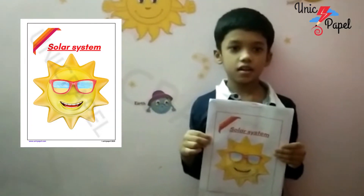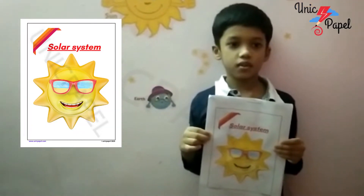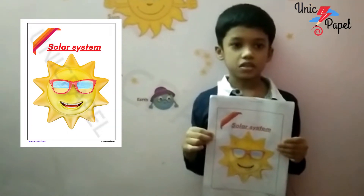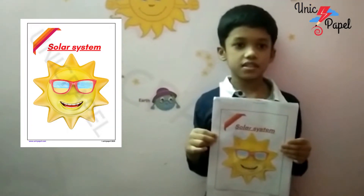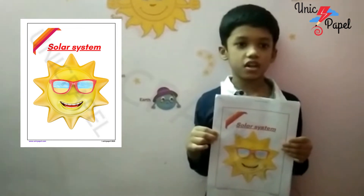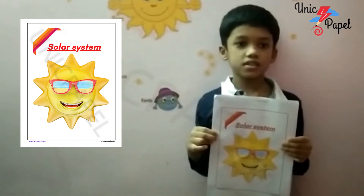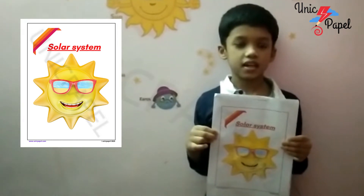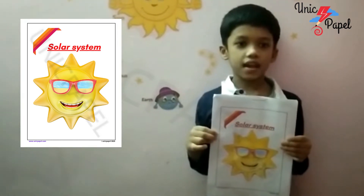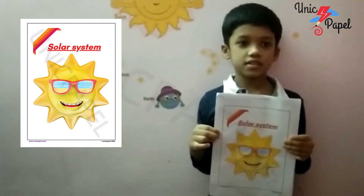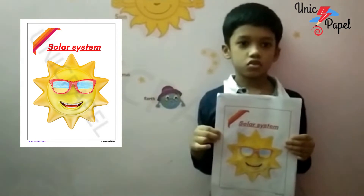Hi kids, let's learn about what is solar system. A solar system is the gravitationally bound system of the sun and the planets that orbits the sun.